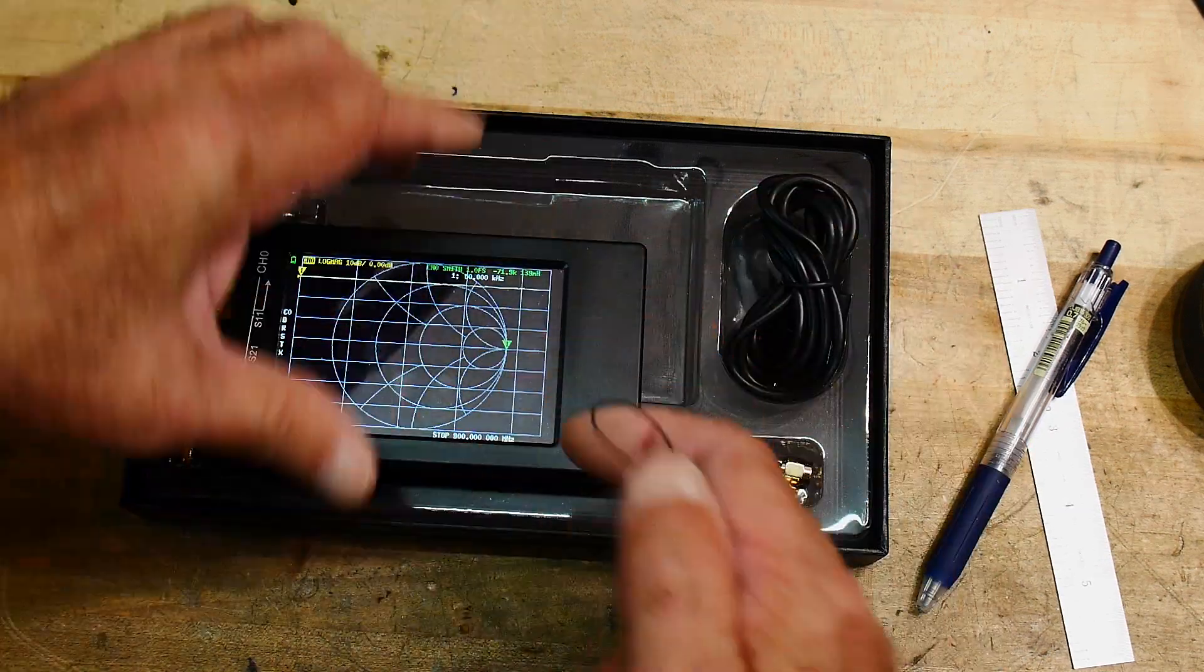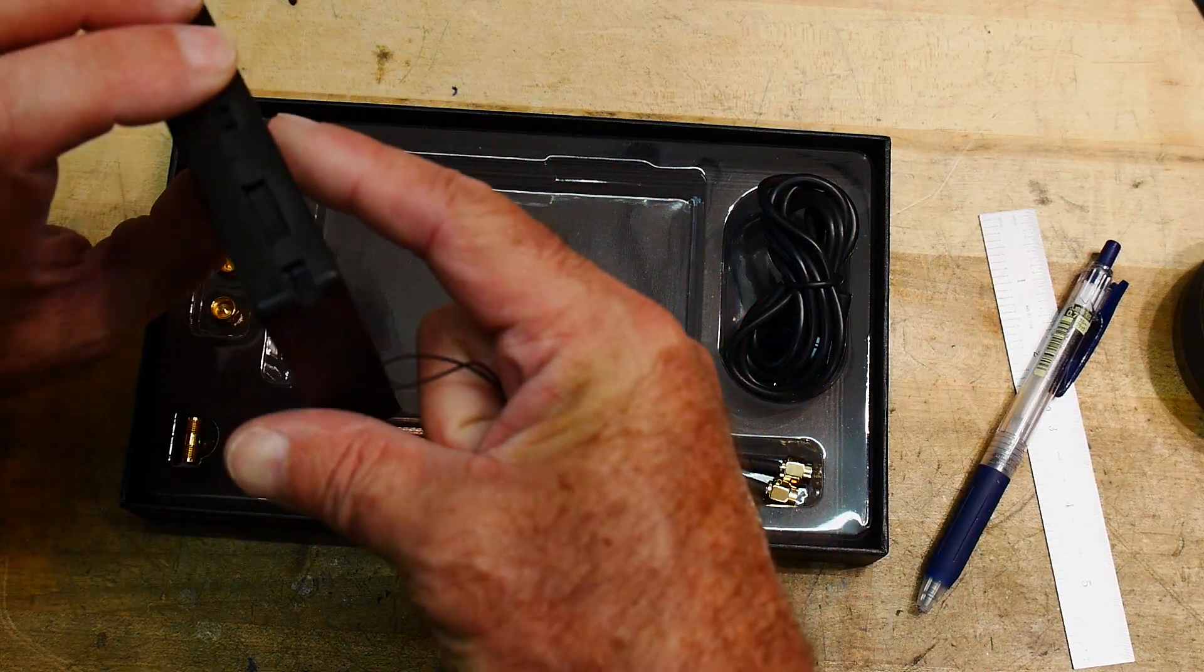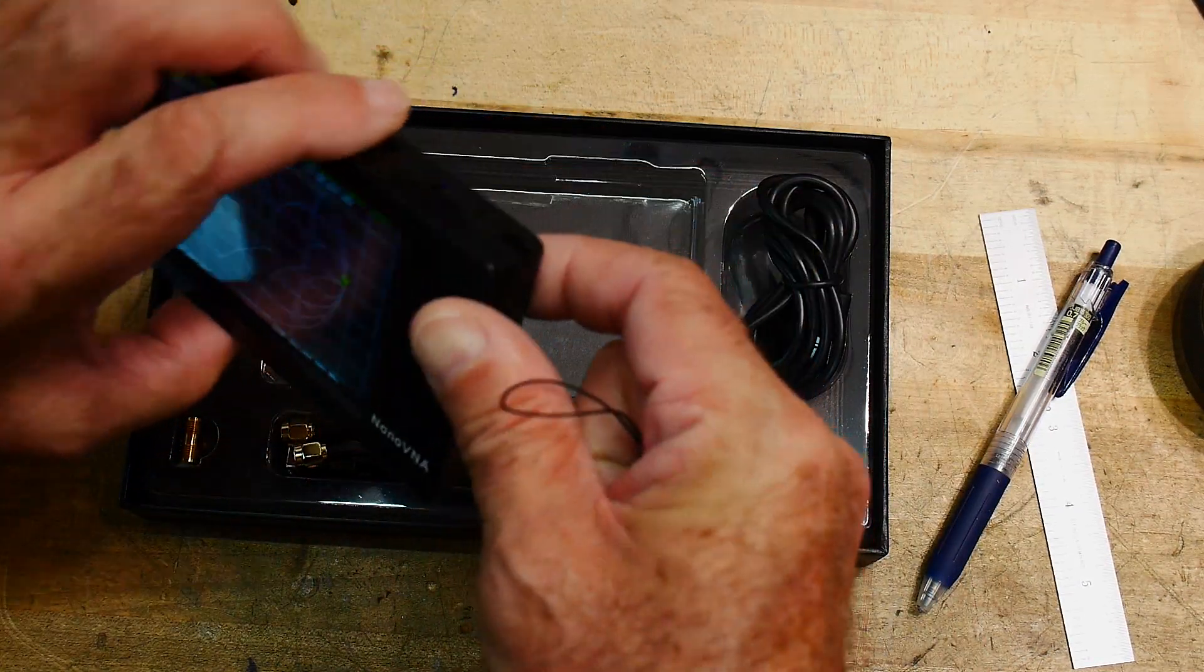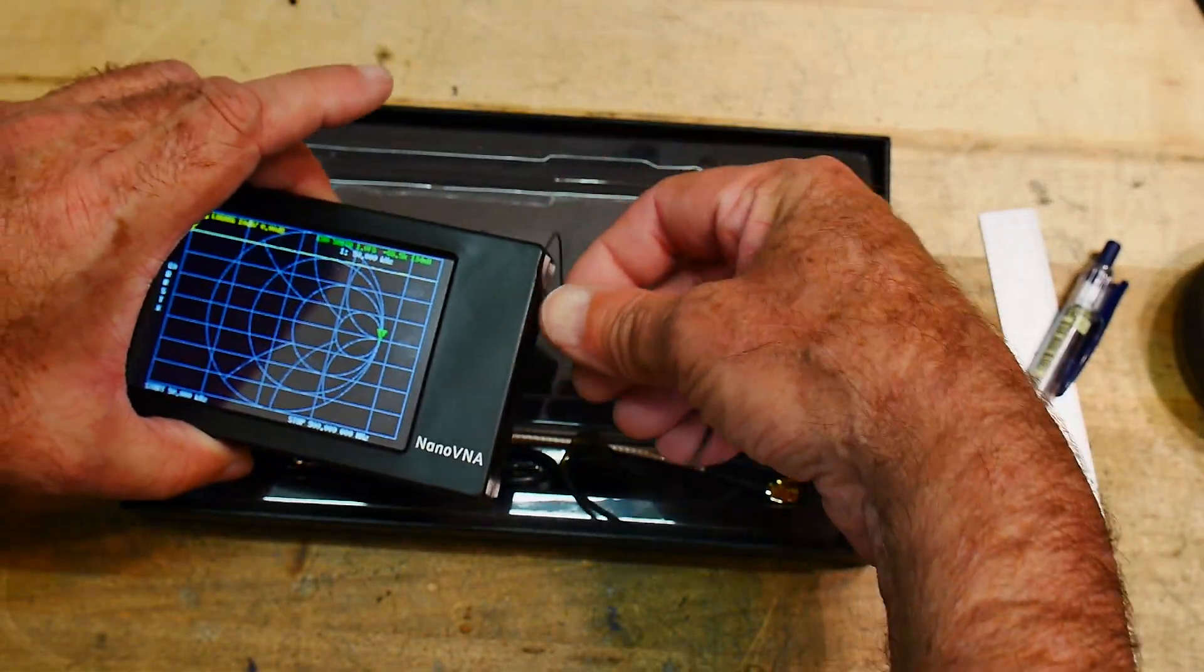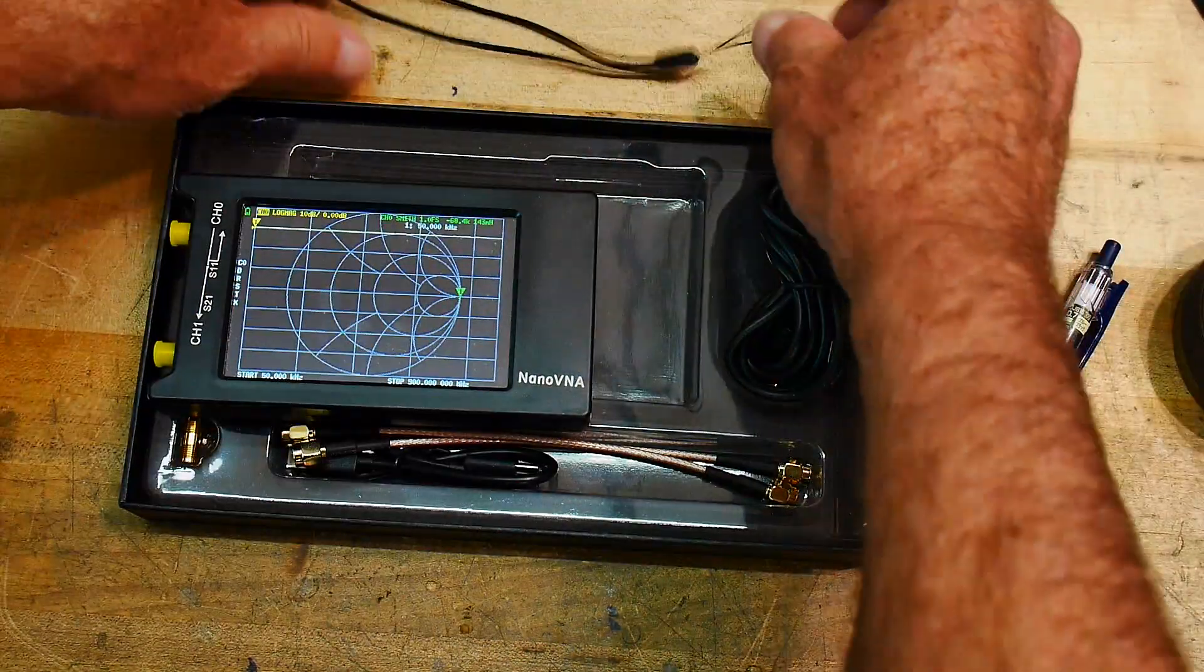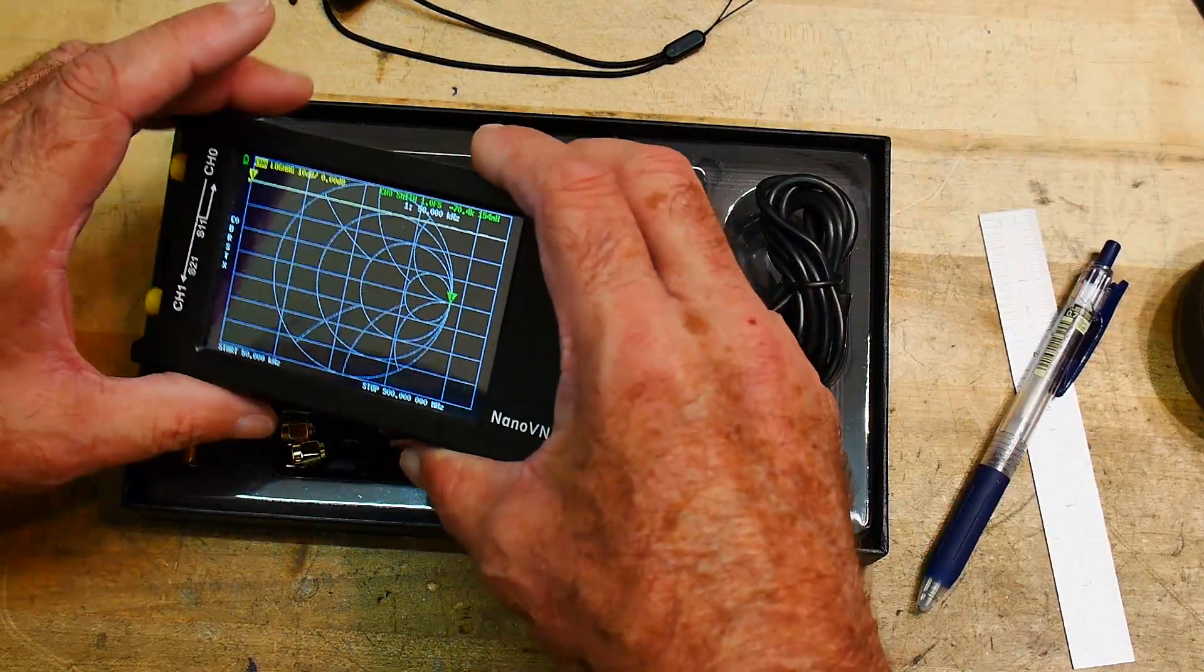And I guess, since this is on the little lanyard, I guess there's a place to actually attach it. Looks like it would have attached here, but oh yeah, here it is. There's a hole right here. So yes, you can put the lanyard on. All right. So that's that. I don't think I'll put that on mine.